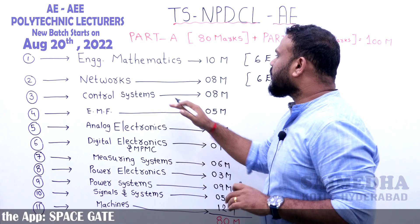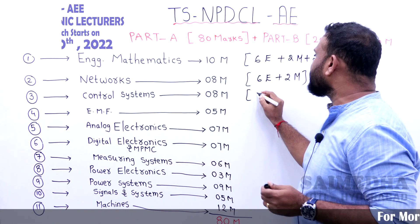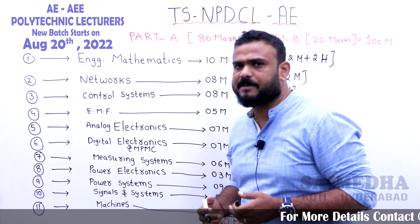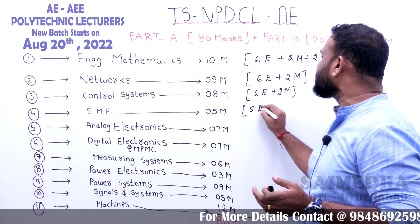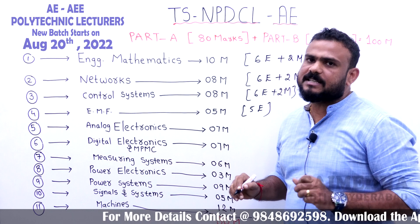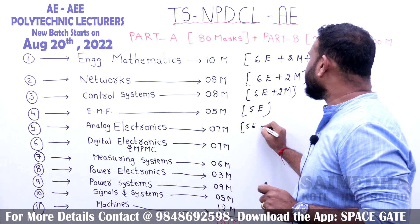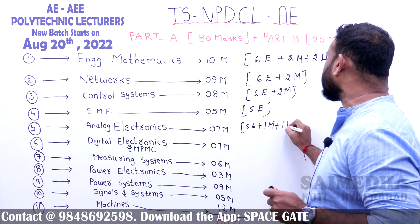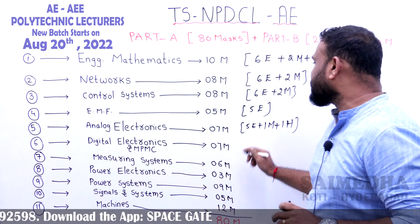In Control Systems, 6 questions are easy and 2 are moderate — no tough questions. For EMF, all 5 out of 5 questions are easy; you can solve all of them. As per Analog Electronics, 5 questions are easy, 1 question is moderate, and 1 question is a little tough.